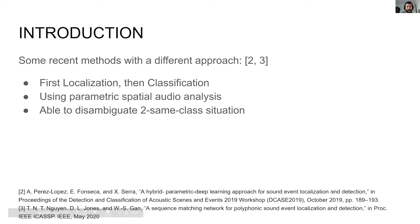However, there has been a small group of systems which follow a different approach better described as first localization then classification. This type of methods usually make use of parametric spatial audio analysis. It is important to mention that such structure allows them to disambiguate the situation when two sound sources belonging to the same sound class are active simultaneously. Such case is usually not solvable by the converse approach.